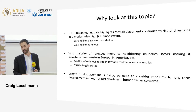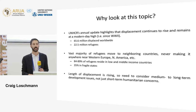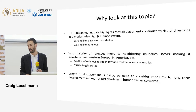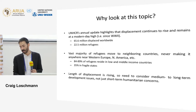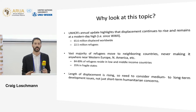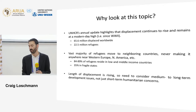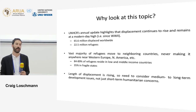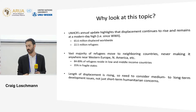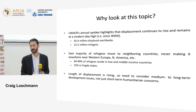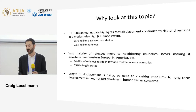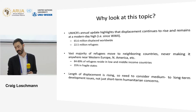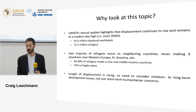Currently we have about 66 million displaced individuals around the world, and about a third of them are refugees. Importantly — and sometimes this is lost in the conversation — the vast majority of these refugees move to neighboring countries, never making it anywhere near Western Europe or North America. Specifically, somewhere between 84 and 89 percent of refugees reside in low and middle income countries, and around 35 percent in fragile states.